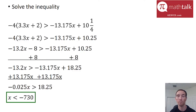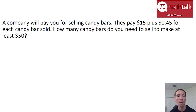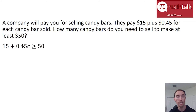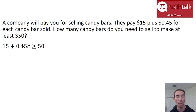Let's look at a word problem and how to solve an inequality from that. A company will pay you $15 plus 45 cents for each candy bar sold. How many candy bars do you need to sell to make at least $50? I need to piece this word problem into an inequality. The $15 is a flat payment, plus 0.45 times the number of candy bars sold — that's my variable — must be greater than or equal to $50.